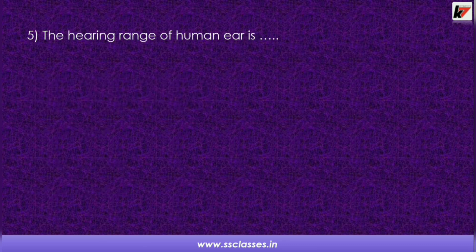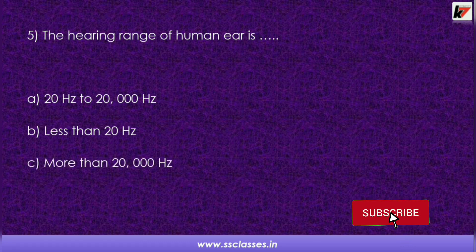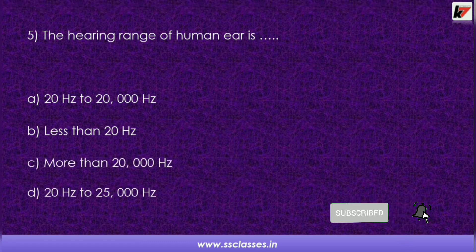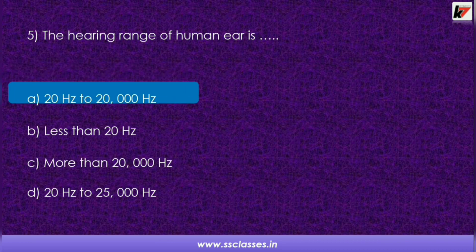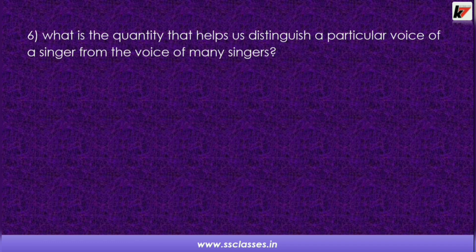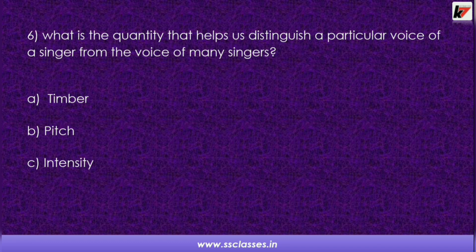Question 5: The hearing range of the human ear is — a very important question. Options are: 20 Hz to 20,000 Hz; less than 20 Hz; more than 20,000 Hz; or 20 Hz to 25,000 Hz. The correct answer is 20 hertz to 20,000 hertz. Question 6: What quality helps us distinguish a particular singer's voice from others? Options are timbre, pitch, intensity, or music. The answer is timbre.